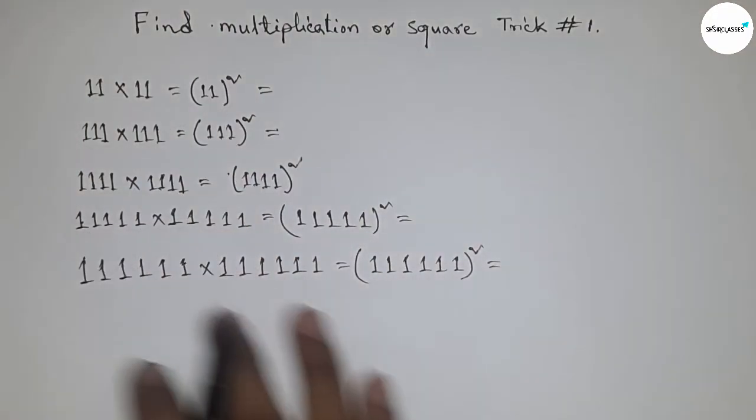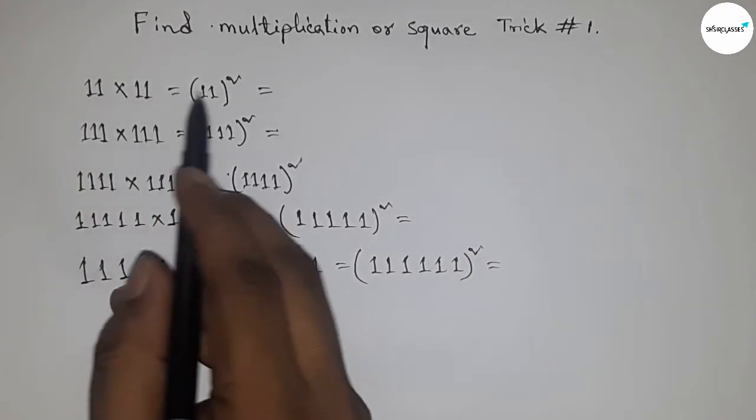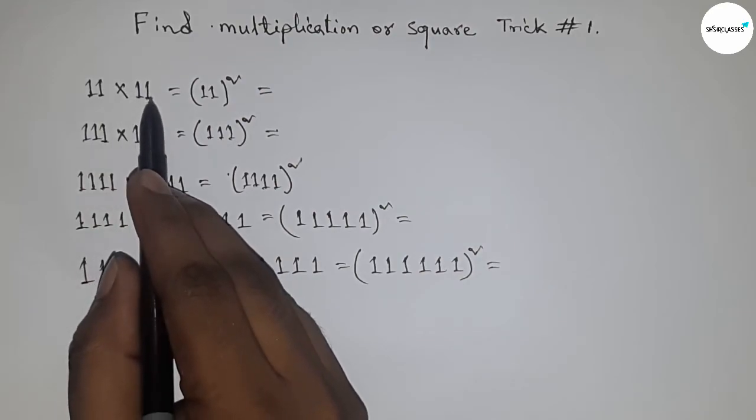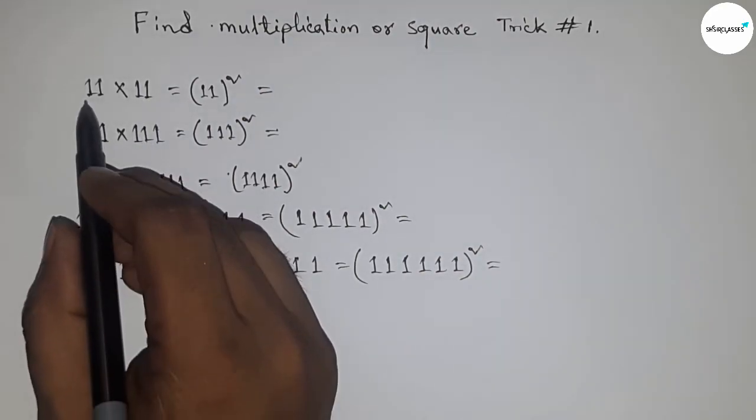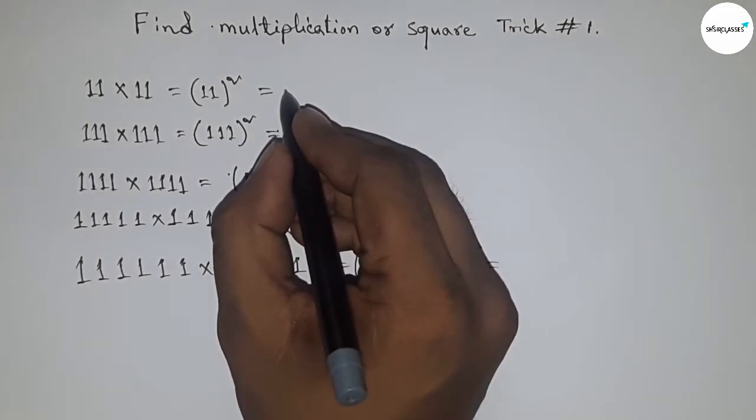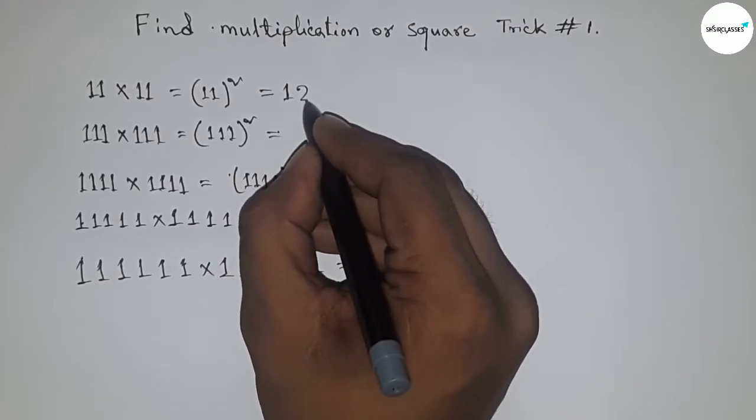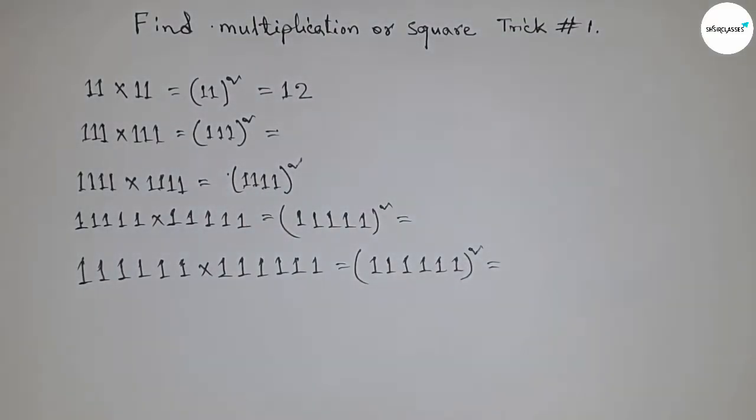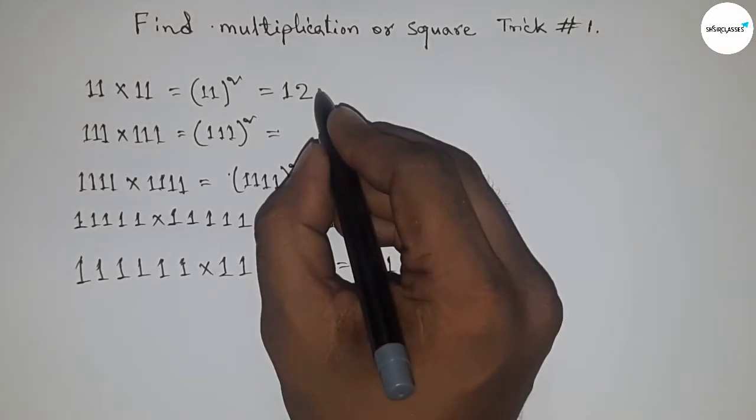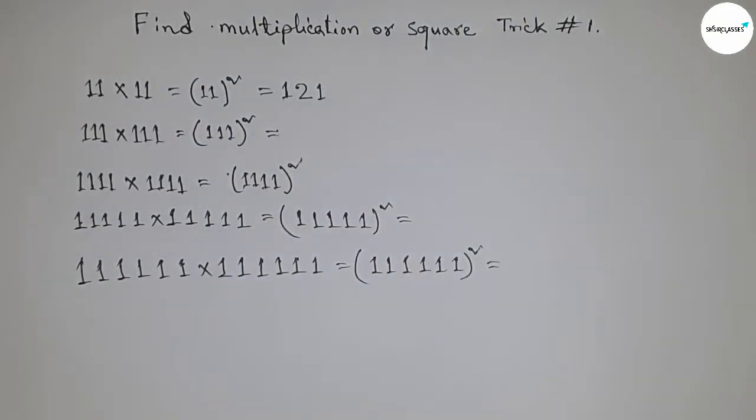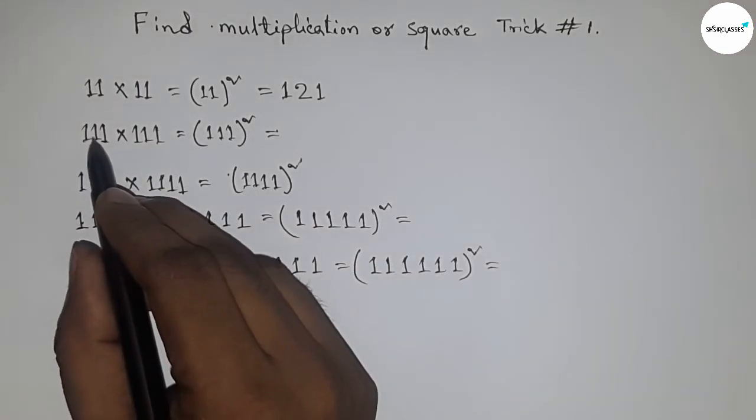So here, first multiplying 11 with 11. The number of ones is 2, so we have to first use the trophy trick. First write for two ones: 1, 2. Then reversely we have to write 1. So this is 1, 2, and this is 1.